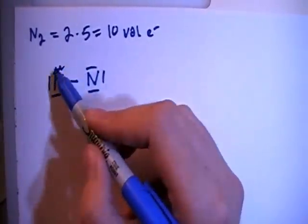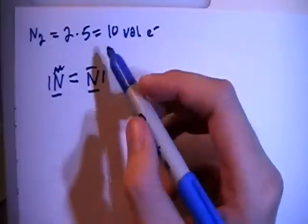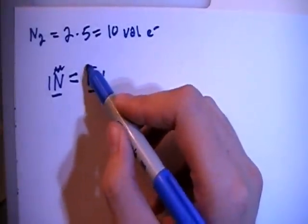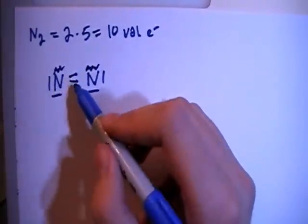So let's move this non-bonding pair into the center here for a double bond, and then let's also get rid of this one. So now there's two, four, six, eight, ten, twelve.